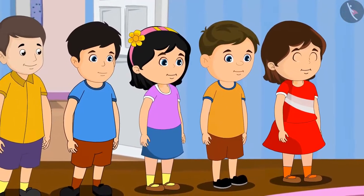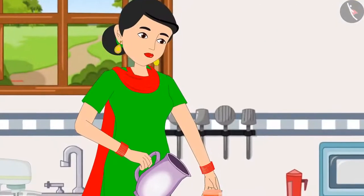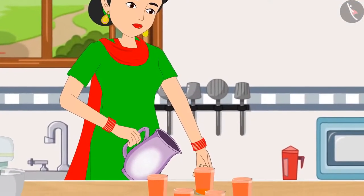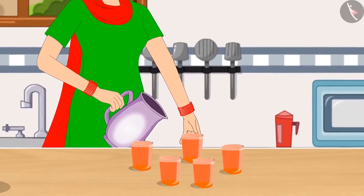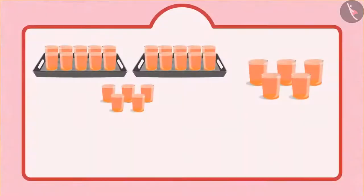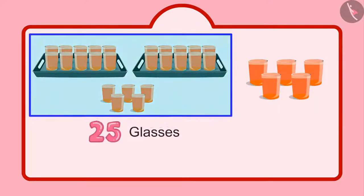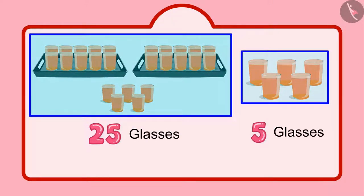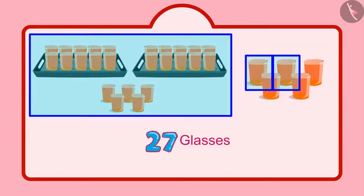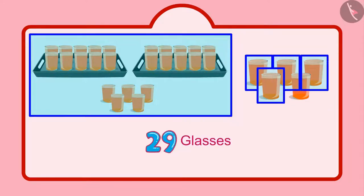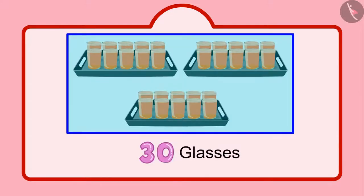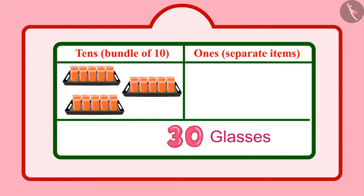After some time, some more friends of Chotu came home, and Chotu's mother made more sherbet for them. Let's see how many glasses of sherbet were made. Chotu had distributed a total of 25 glasses of sherbet, and after that, 5 more glasses were added. So that makes it 26, 27, 28, 29, 30. That means 30 glasses, which we write like this. So children, in 30, there are 3 tens and 0 units.